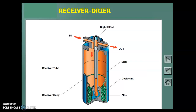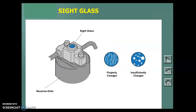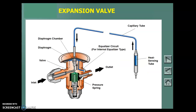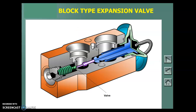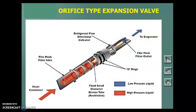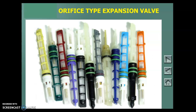Here's the receiver dryer — some of them have sight glasses to tell if there are bubbles going through, though that's not very common anymore as it just became a leak point. Here's a cutaway of the expansion valve, which opens and closes based on the temperature at the evaporator outlet. Here's what a fixed orifice tube looks like — the small orifice is right here, and they're color-coordinated. The color of the tube tells you the size of the orifice, so if you pull out a green one, you put in a green one. Different colors indicate different size orifices.